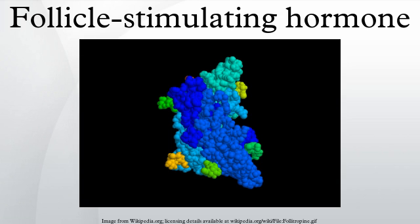In females, FSH initiates follicular growth, specifically affecting granulosa cells. With the concomitant rise in inhibin B, FSH levels then decline in the late follicular phase. This seems to be critical in selecting only the most advanced follicle to proceed to ovulation. At the end of the luteal phase, there is a slight rise in FSH that seems important to start the next ovulatory cycle.